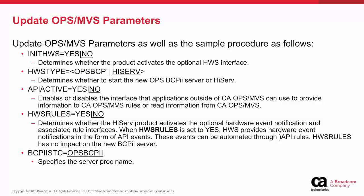The HWS Type parameter must be set to Ops BCP to enable the new BCPII Server. The API Activate parameter enables or disables the interface that applications outside of CA Ops MVS can use to provide information to or read information from CA Ops MVS. This parameter must be set to Yes, since both HiServe and the new Ops MVS BCPII Server are separate address spaces outside of Ops MVS. The HWS Rules parameter determines whether the HiServe product activates the optional hardware event notification and associated rule interfaces.